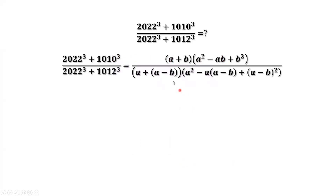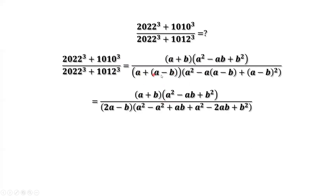Continue to simplify the denominator. We have A — that's 2A minus B. Here I have A squared. Minus A times A, that's A squared. Negative A, negative B, that's positive AB. Here, that's A squared minus 2AB plus B squared. You can see these cancel each other. And plus 2AB, negative 2AB, you have negative AB. So you have A squared plus B squared.